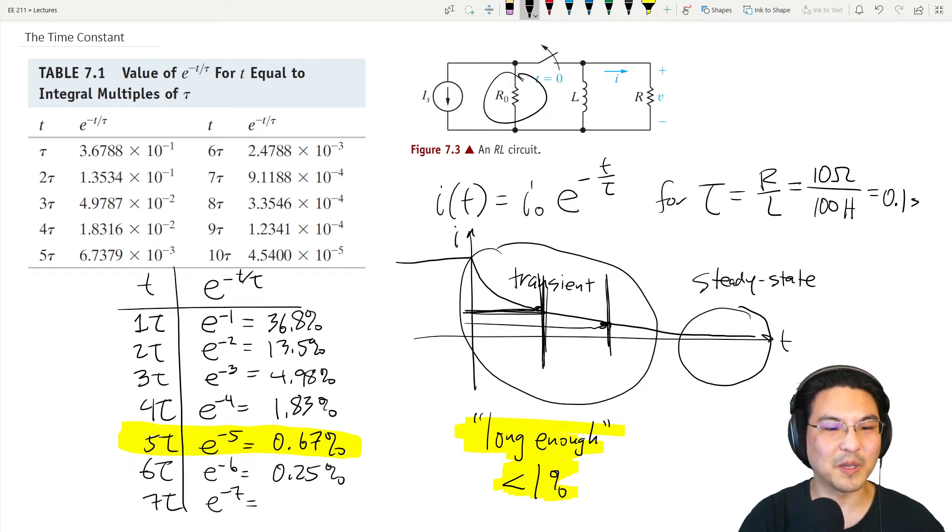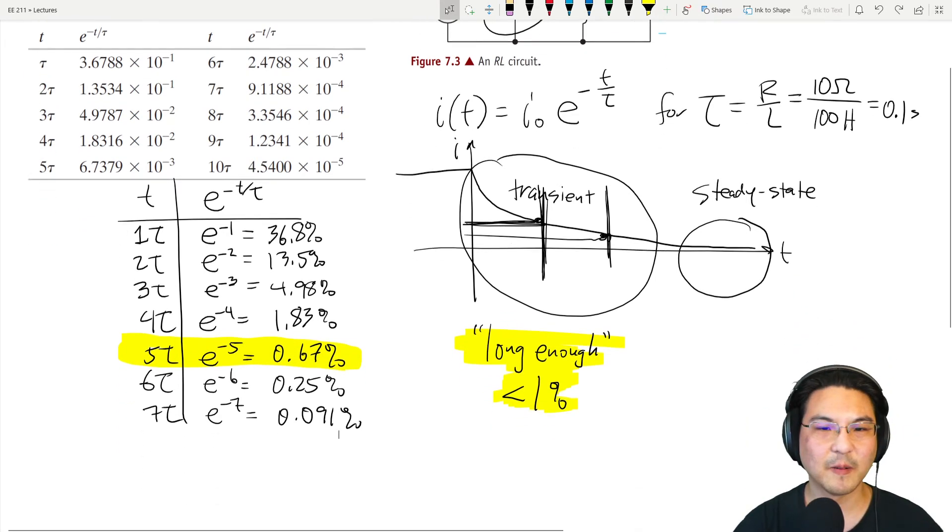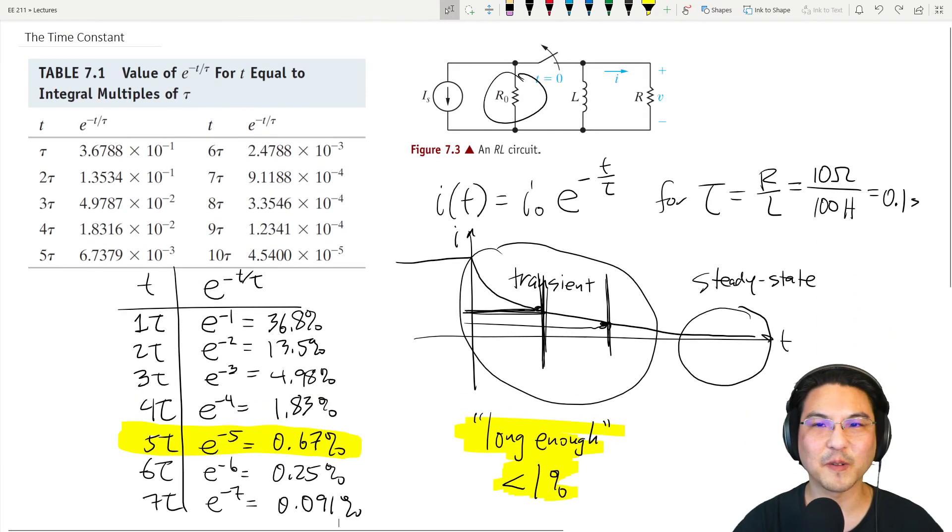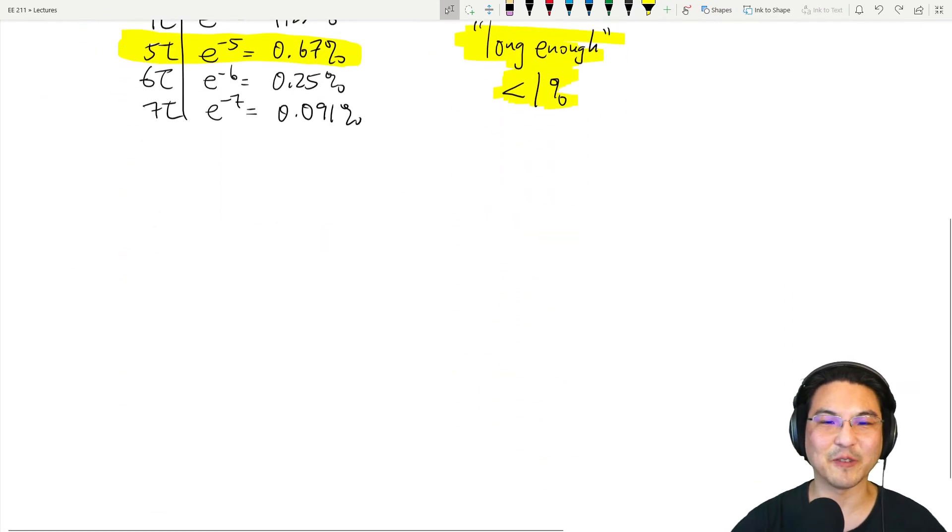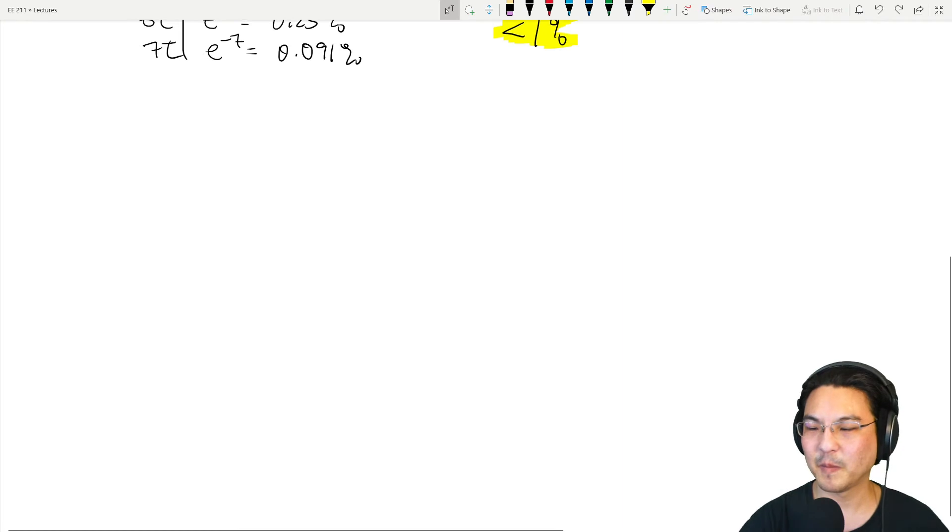If you wait seven time constants, that would be 0.091 percent. Now we're below 0.1 percent. So that extra two time constants gets you another order of magnitude smaller because the decay is exponential. That's all for this video—I'll tell you, you can stop here, but I have a little story.